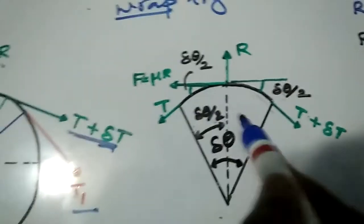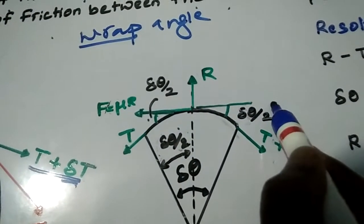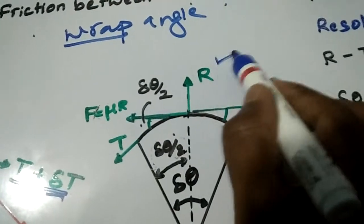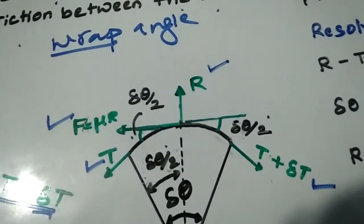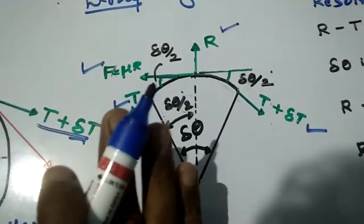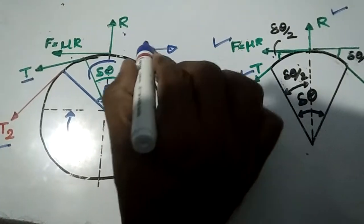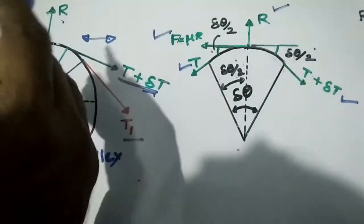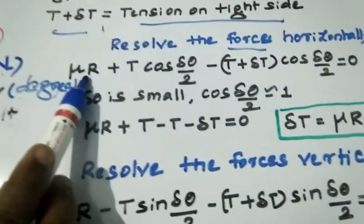Delta theta is the small angle. When you consider symmetry, each half becomes delta theta by 2. Now you have to resolve the forces in the horizontal direction and vertical direction. For the horizontal direction, taking one side as positive and the other as negative, the friction force mu R is taken as positive.